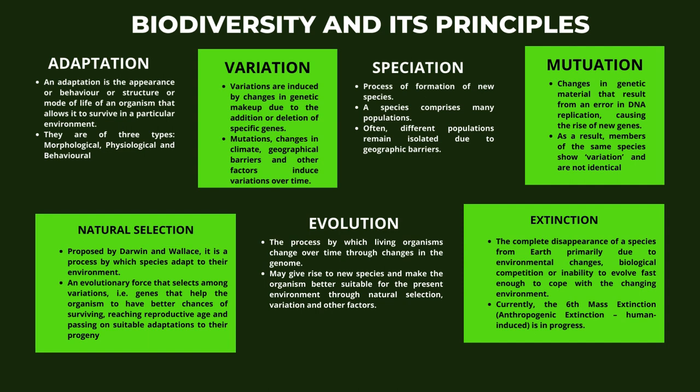Followed by evolution, which is the process by which living organisms change over time through changes in the genome. It may give rise to new species and make organisms better suited to the present environment through natural selection, variation, and other factors. Finally comes extinction, which is the complete disappearance of a species from Earth, primarily due to environmental changes, biological competition, or inability to evolve fast enough to cope with the changing environment. Currently, the sixth mass extinction — anthropogenic extinction, which is human-induced — is in progress.